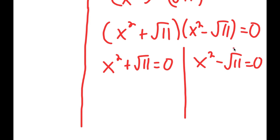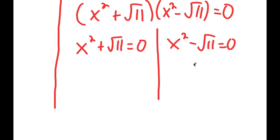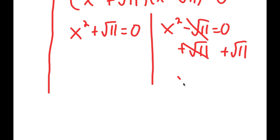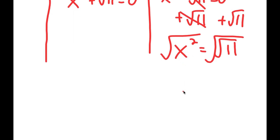For x squared minus the square root of 11 equals 0, I add the square root of 11 on both sides to get x squared equals the square root of 11. Taking the square root on both sides, the square root of x squared is x, and the square root of the square root of 11 is the fourth root of 11. So x equals positive or negative fourth root of 11.